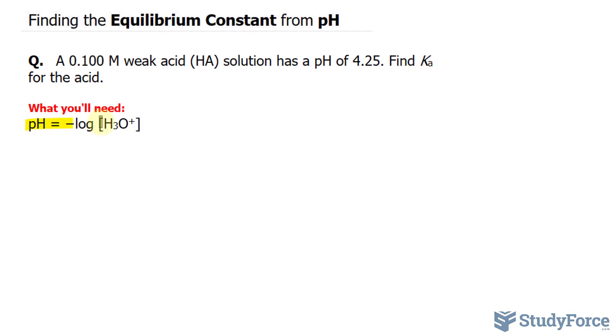We'll begin by using the relationship shown on your screen, where pH equals negative log times the hydronium concentration. The pH provided is 4.25, and that's equal to negative log of the hydronium concentration.